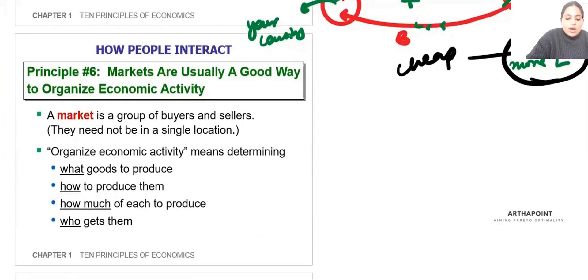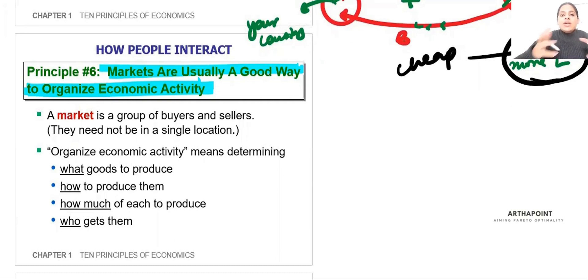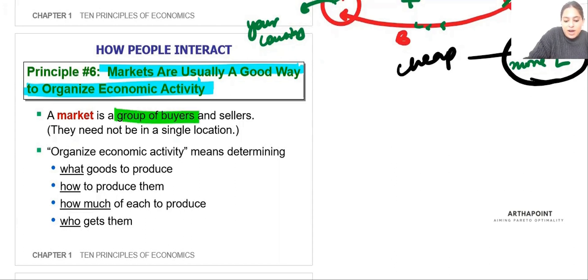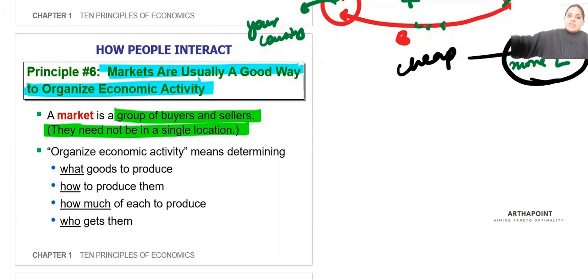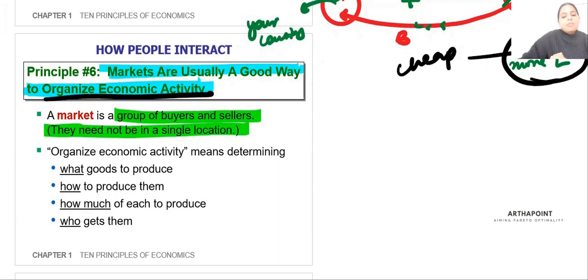The sixth principle: markets are usually a good way to organize economic activity. A market is where individuals come, meet, interact, a price is set, one pays the price, the other gets the good. A market is nothing but a group of buyers and sellers — they need not be in the same location. Today I can sit and order from Amazon from a seller who is abroad or far away within India. Wherever buyers and sellers can come together, online or offline, economic activity can be done in a much better way.